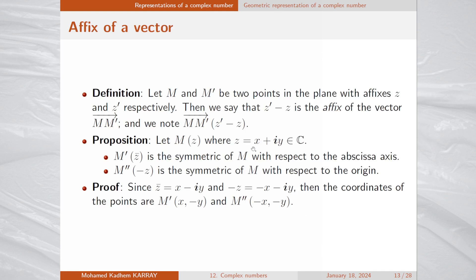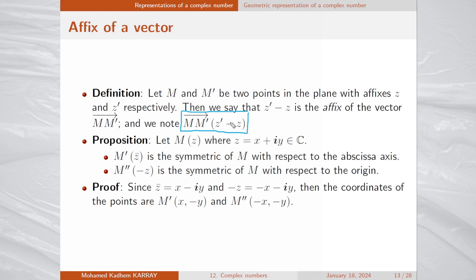We also define the affix of a vector. Let M and M prime be two points with affixes z and z prime. Then z prime minus z is the affix of the vector MM prime — we begin with the affix of M prime and subtract the affix of M. We use the same notation for the affix of a vector as we did for points.